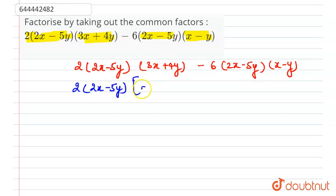The left part will be 3x + 4y. If you are taking common 2(2x - 5y), then it will be divided here. 2x - 5y will be cancelled out with 2x - 5y, and 6 will go by 2 by 3 times. Here the remaining part will be 3 and this term x - y.